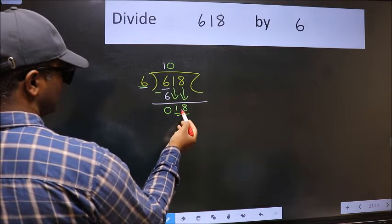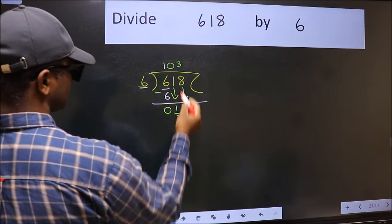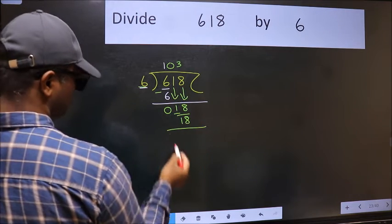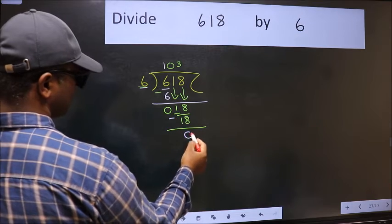Now 18. When do we get 18 in the 6 table? 6 times 3 is 18. Now we should subtract. We get 0.